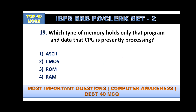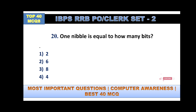Which type of memory holds only the program and data that the CPU is presently processing — ASCII, CMOS, ROM, or RAM? The answer is RAM, Random Access Memory.